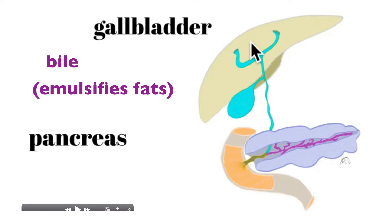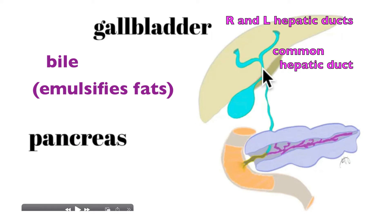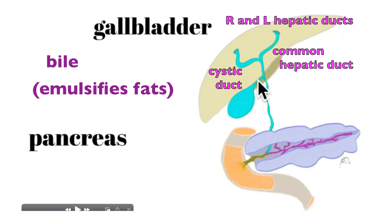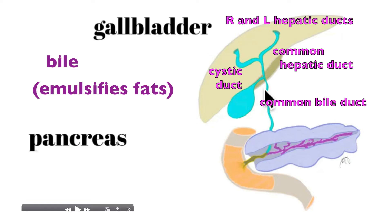If bile is produced in excess, it backs up and moves into the gallbladder until needed again. Bile moves from the liver to the gallbladder via the right and left hepatic ducts, which merge into a common hepatic duct. The cystic duct is a two-way duct — bile moves into the gallbladder to be stored and is released from the gallbladder via the cystic duct into the common bile duct, also simply known as the bile duct.